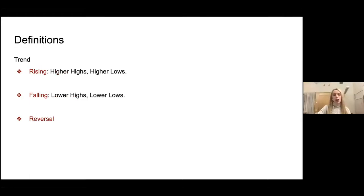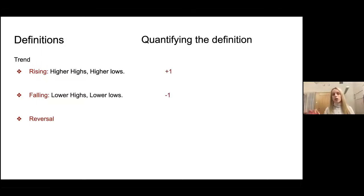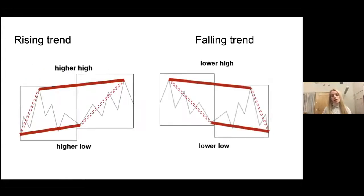Specifically, a trend is defined as rising if it has higher highs and higher lows, and falling if it has lower highs and lower lows. In addition, we can quantify this definition by assigning the value plus one for rising trends and minus one for falling trends. What we mean by higher highs and higher lows for rising trends can be seen in these graphs.